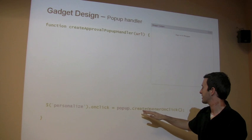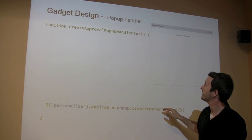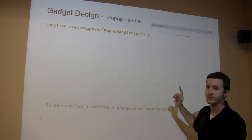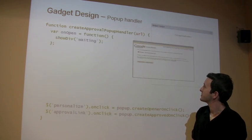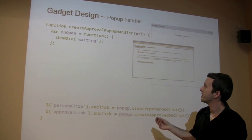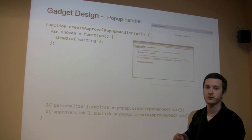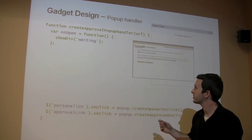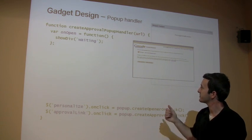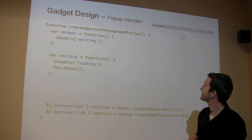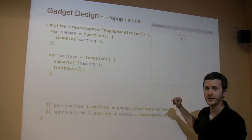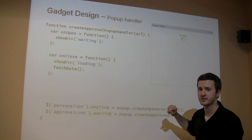We've created an on-click handler for that. When they click it, this pop-up window pops up. This is a Google page, and they're choosing or denying access to their Blogger data. If they choose to grant access, the gadget will refresh itself.